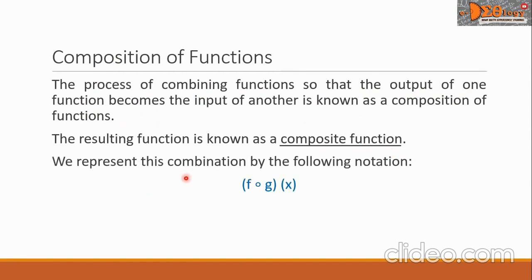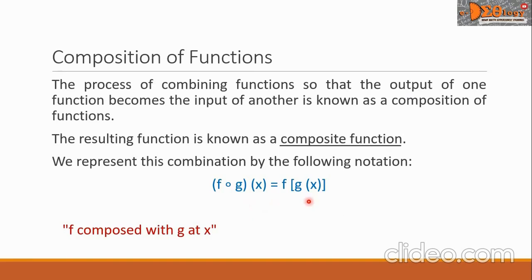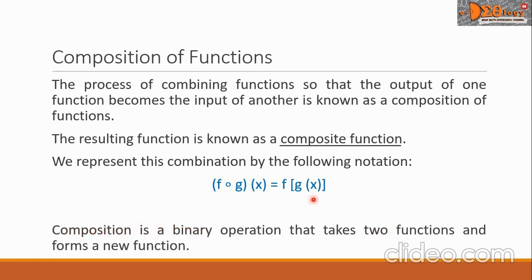We represent this combination by the following notation. This is read as f composed with g at x. We will simplify this notation to f of g of x. Composition is a binary operation that takes two functions and forms a new function.